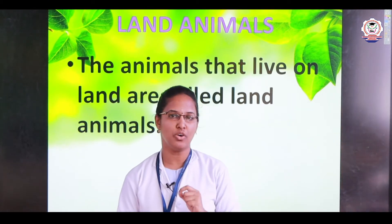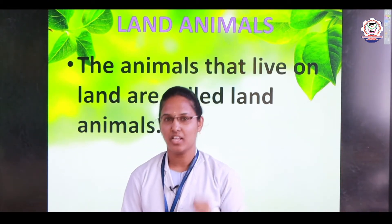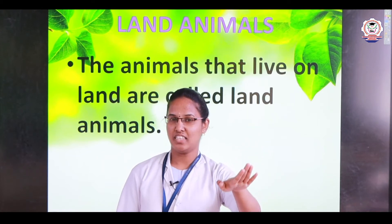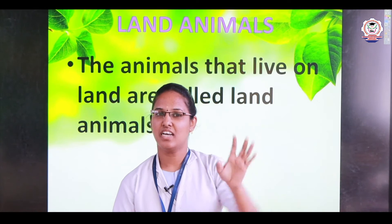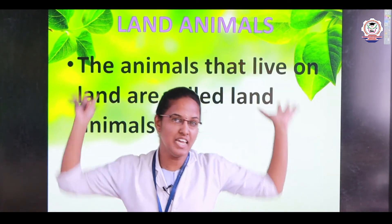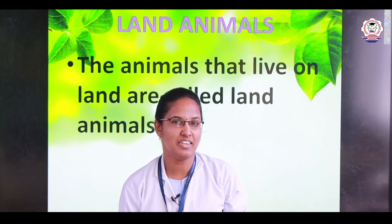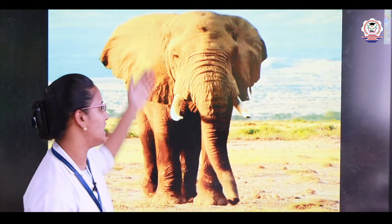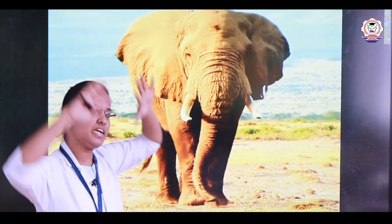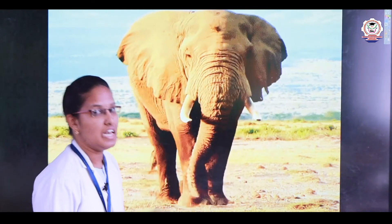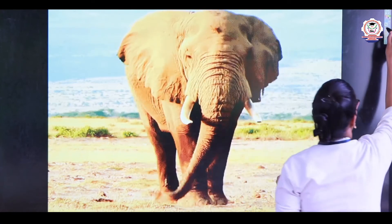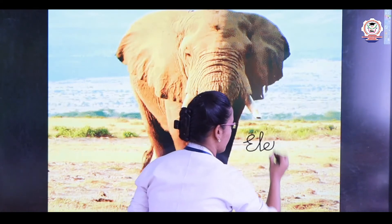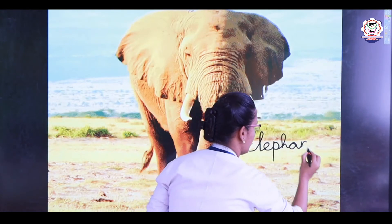I am going to give you a clue and you have to find out the name of the animal. It is the largest animal. It has a long trunk, four legs, and big ears. What is the name of that animal? It is an elephant! E-L-E-P-H-A-N-T — elephant.